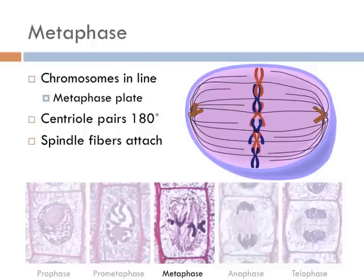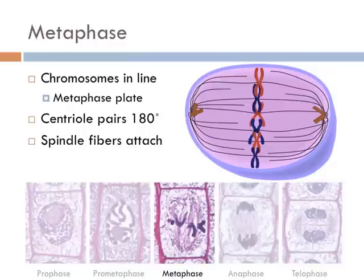Metaphase always reminds me of my short-lived career as a professional country line dancer. In this phase, chromosomes make a perfect line — this great gathering is known as the metaphase plate. At this point, the centriole pairs have made it to the polar opposite ends of the cell, and the spindle fibers that were growing from the centrioles finally attach to the kinetochores of the sister chromatids.